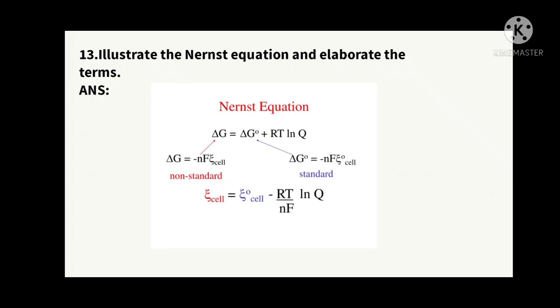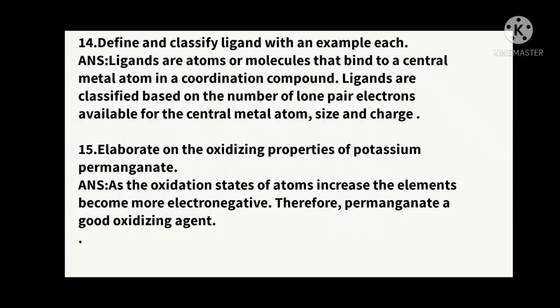Thirteenth question: illustrate the Nernst equation and elaborate its terms. The Nernst equation is: ΔG = ΔG° + RT ln Q. You have to write all the illustrations like the standard cell potential ΔG°.